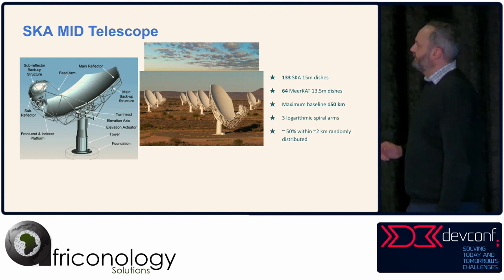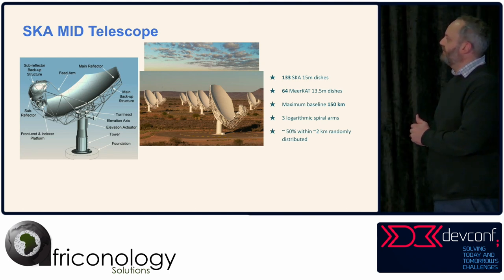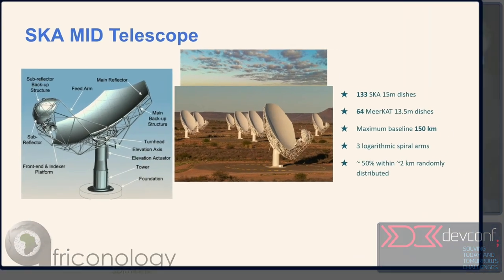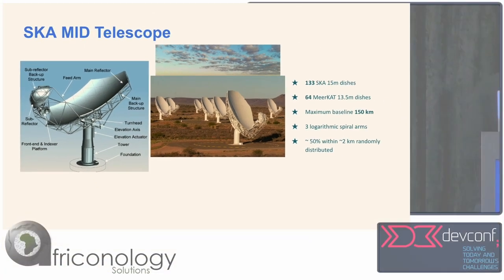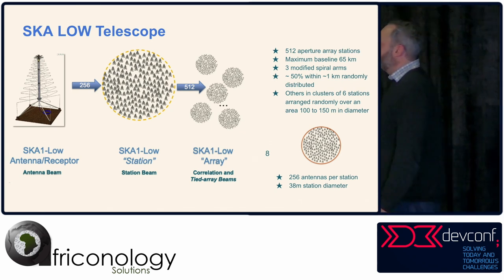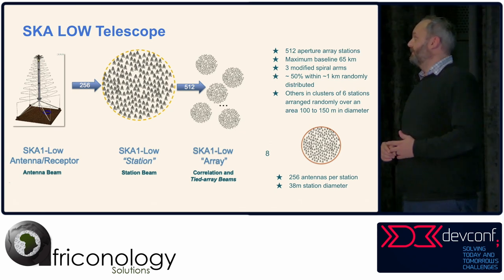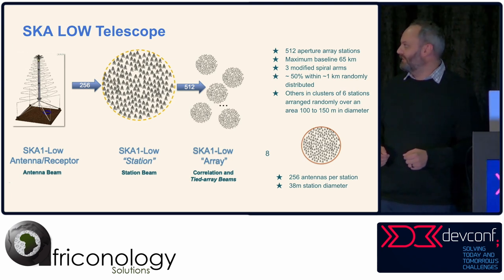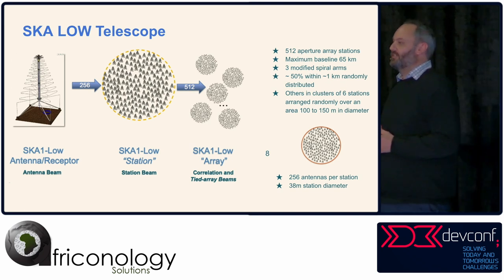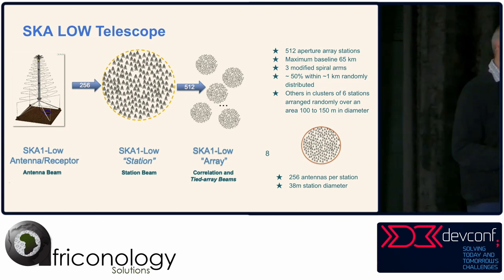The new dishes have a 15-metre-wide dish. We're building 133 of those, which will be added to the 64 existing MeerKAT dishes, giving a maximum baseline of 150 kilometres — the maximum distance between the two furthest dishes. In Australia, they're building an antenna array: 256 antennas form a station, and there will be 512 of those stations in the Australian outback — a very large antenna array.